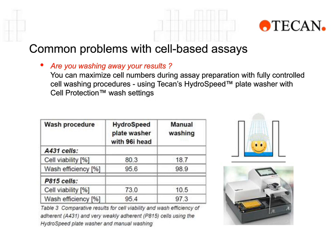The first solution is cell washing. The HydroSpeed microplate washer from TECAN uses cell protection washing settings to control many parameters that ensure the cell layer is not interrupted, giving good cell retention for both strongly adherent and weakly adherent cell lines. This is demonstrated versus manual methods, controlling needle positioning, buffer dispensing, and aspiration rates.